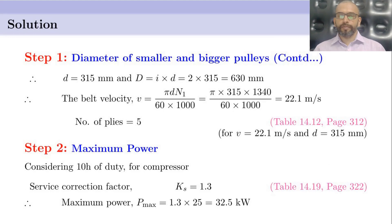We find the diameter of the larger pulley D as velocity ratio i times d, that is 2 × 315 = 630 mm. The belt velocity V is recalculated as π·D·N1 divided by 60,000. Since we standardized small d from 285 to 315 mm, the revised belt velocity is 22.1 m/s. The number of plies is found to be 5, taken from table 14.12 on page 312, for a velocity of 22.1 m/s and diameter d of 315 mm.